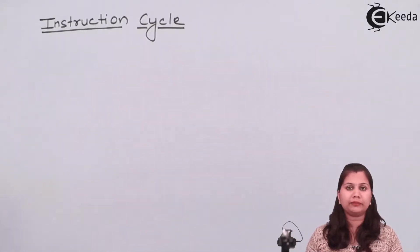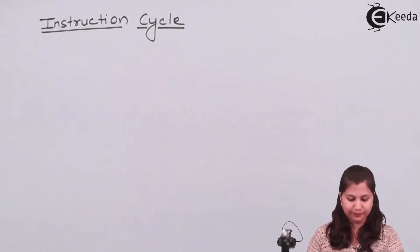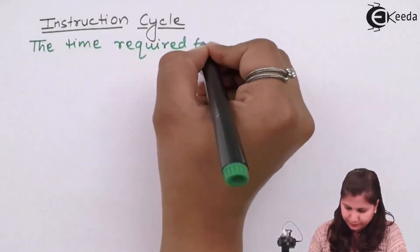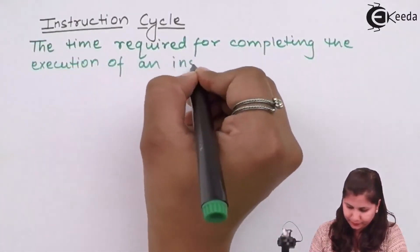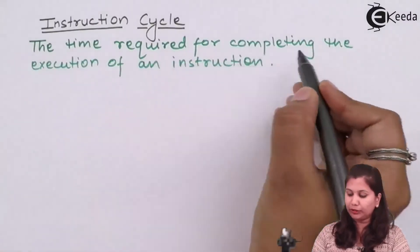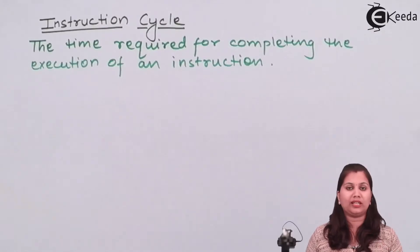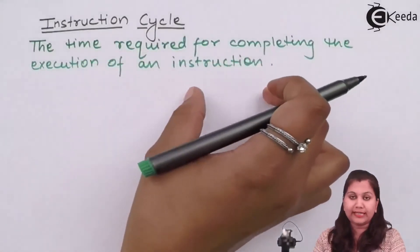The first term is the instruction cycle. It is the time taken to execute a complete instruction by the microcontroller. The definition of instruction cycle is: the time required for completing the execution of an instruction. This time can be 5 microseconds, 1 microsecond, or 0.1 microsecond — it can be any amount of time.